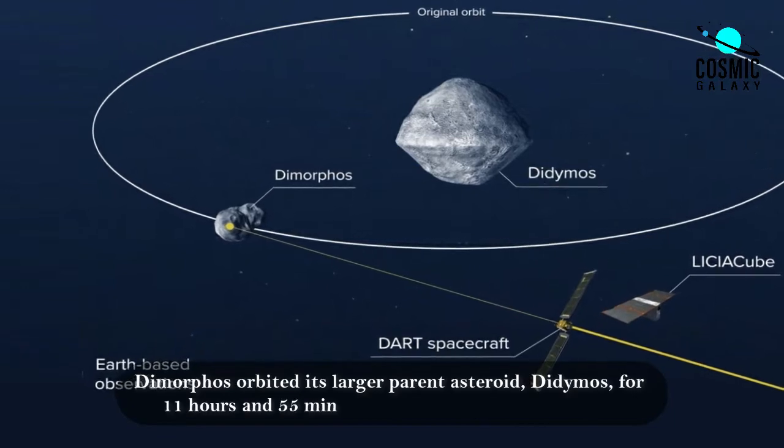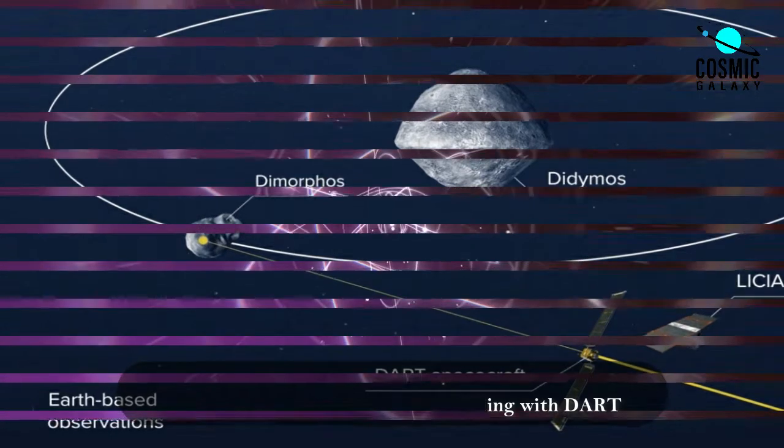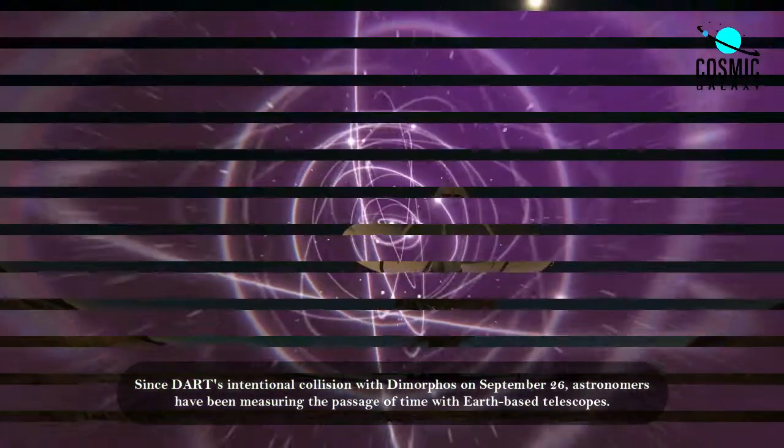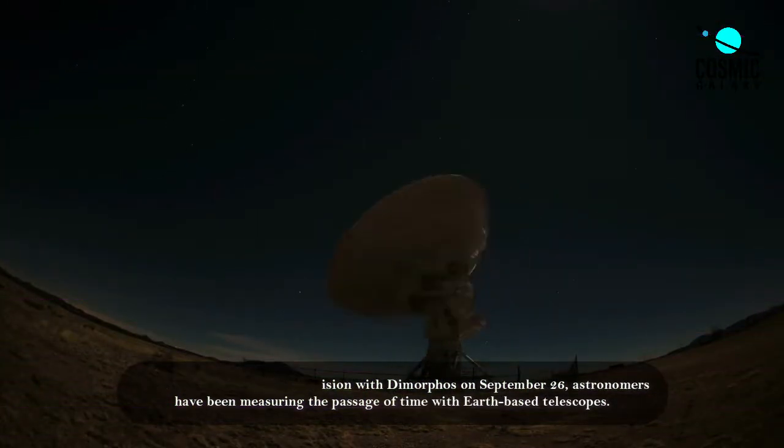Dimorphos orbited its larger parent asteroid Didymos for 11 hours and 55 minutes before colliding with DART. Since DART's intentional collision with Dimorphos on September 26th, astronomers have been measuring the passage of time with Earth-based telescopes.